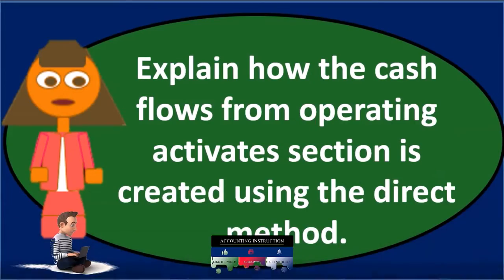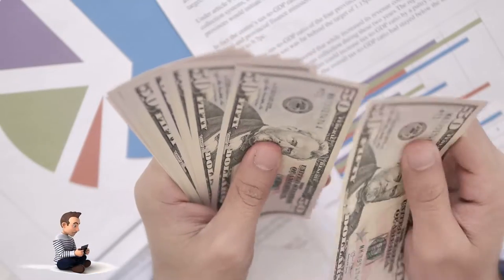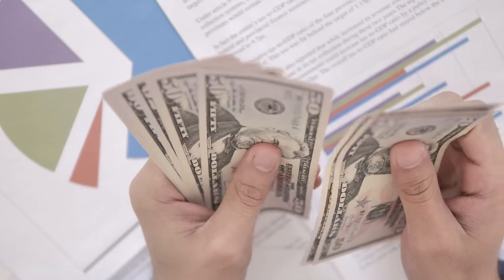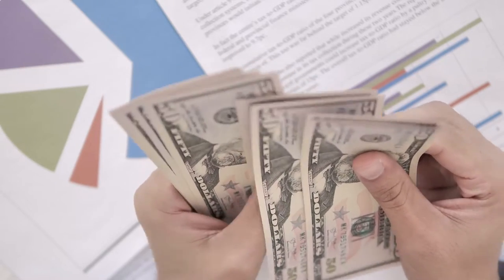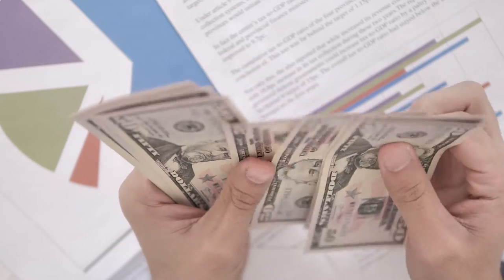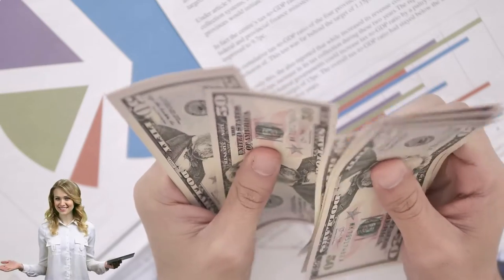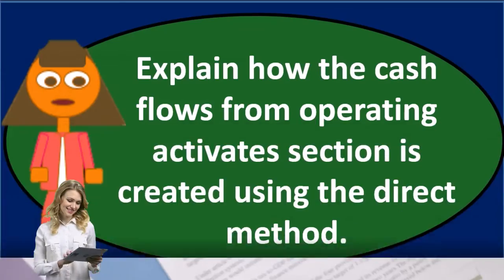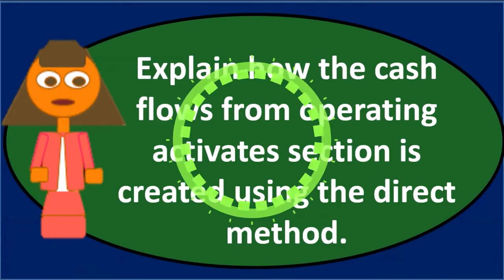The statement of cash flows is one of the major financial statements. We have the balance sheet, the income statement, statement of equity, and statement of cash flows. The statement of cash flows reports the change in cash — the activity on a cash basis — in three major categories: operating, investing, and financing.